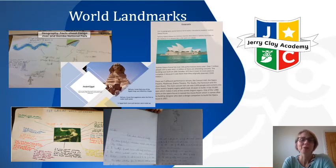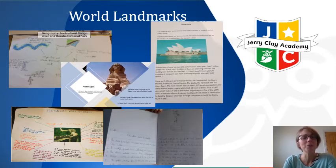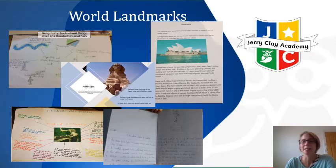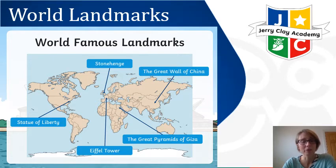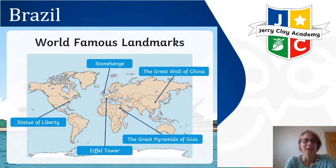Here are some of the fantastic pieces of work some of you did last week when we were learning about world landmarks — the Sydney Opera House, the Sphinx in Egypt, the Gumbay National Park, the Great Wall of China, and the Statue of Liberty. I wonder if you looked on the world map to find out where they would be. Here are the locations of some world-famous landmarks: the Great Wall of China, Stonehenge, the Statue of Liberty, the Eiffel Tower in France, and the Great Pyramids.